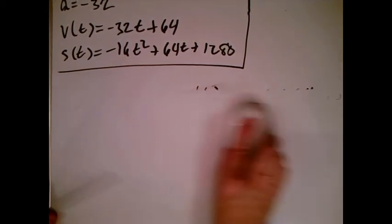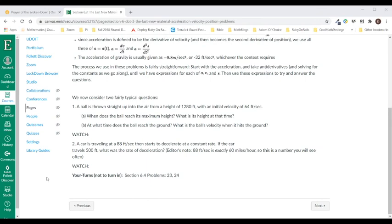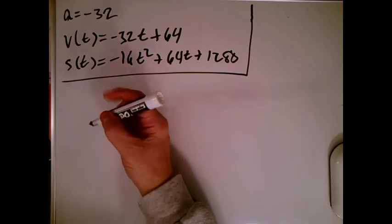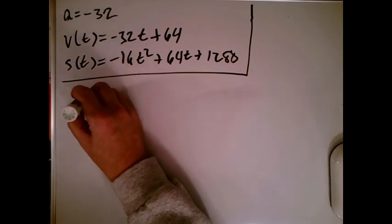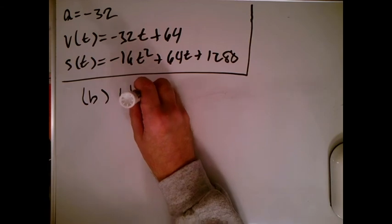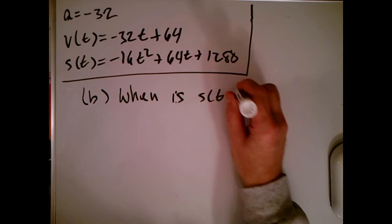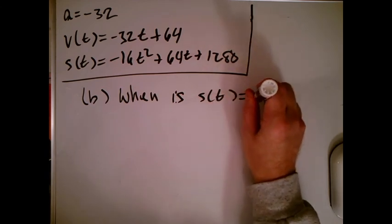I'm going to erase the answer to part A, and we're going to go over and see what part B looks like. Part B: At what time does the ball reach the ground? What is the ball's velocity when it hits the ground? All right, so I'm going to go back over here, looking at part B. They say, when does the ball reach the ground? That is when is s(t) equal to 0?